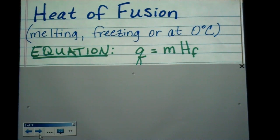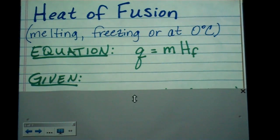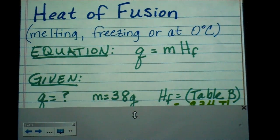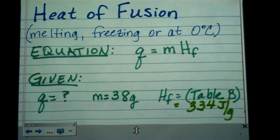We know we're talking about heat of fusion, which is melting or freezing, and we're actually talking about zero degrees Celsius if we're talking about water, which is mostly what we're doing. Q equals MHF is the equation, which we always write the equation first. Our next step is going to be write down the given values. Q is what we're looking for. M is 38 grams from the question. HF is from table B, which is in the front of the reference tables, and it's 334 joules per gram.